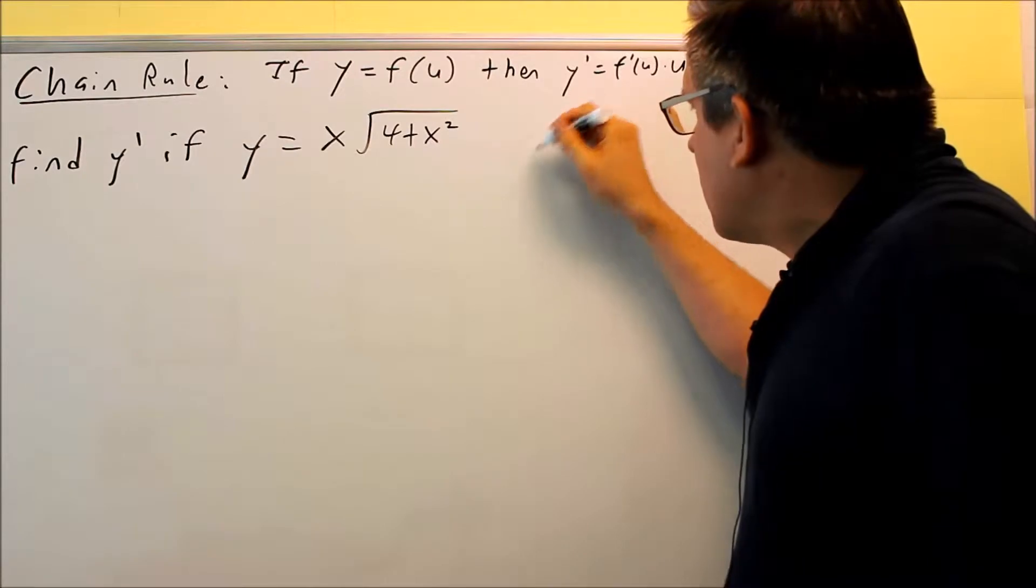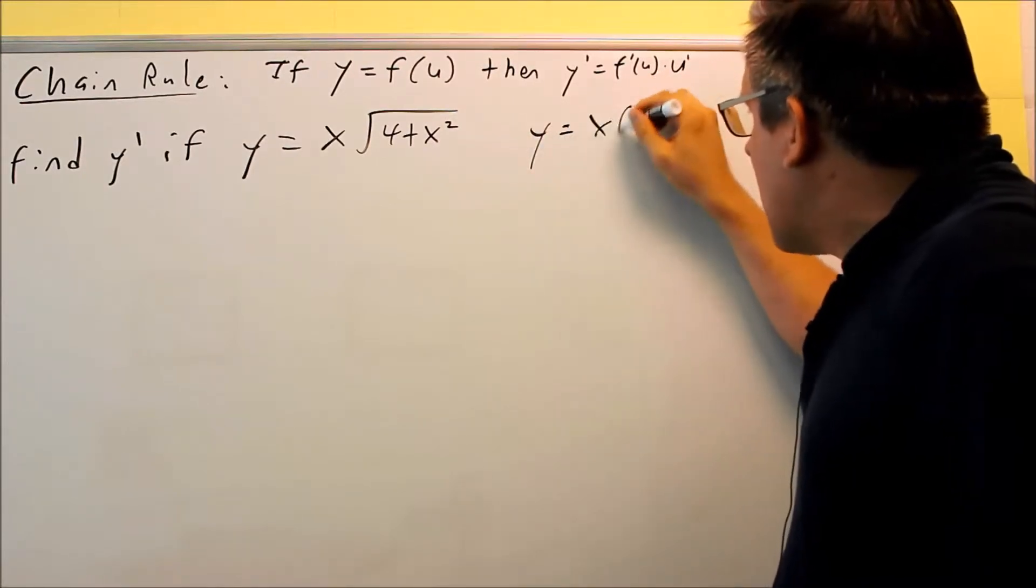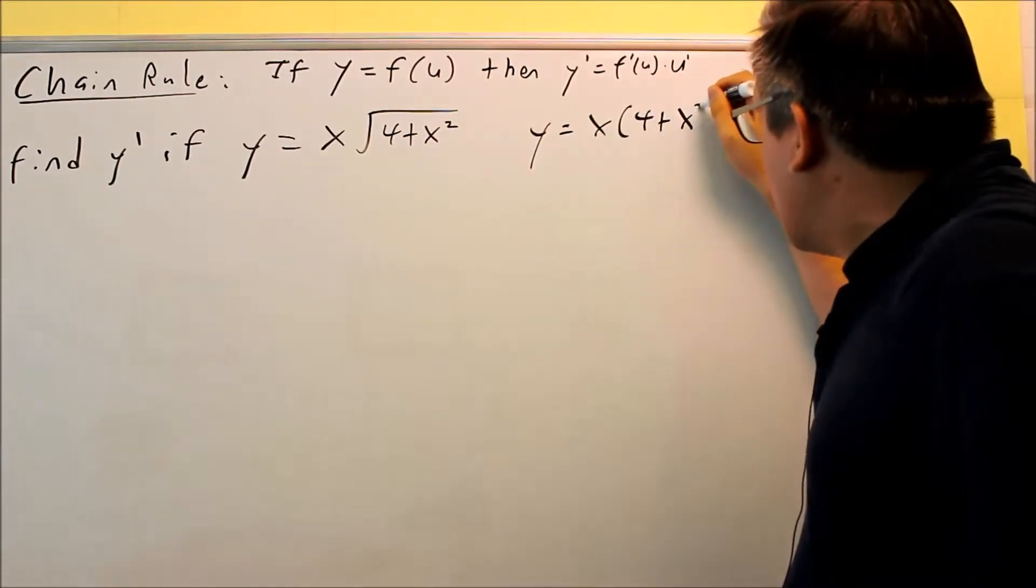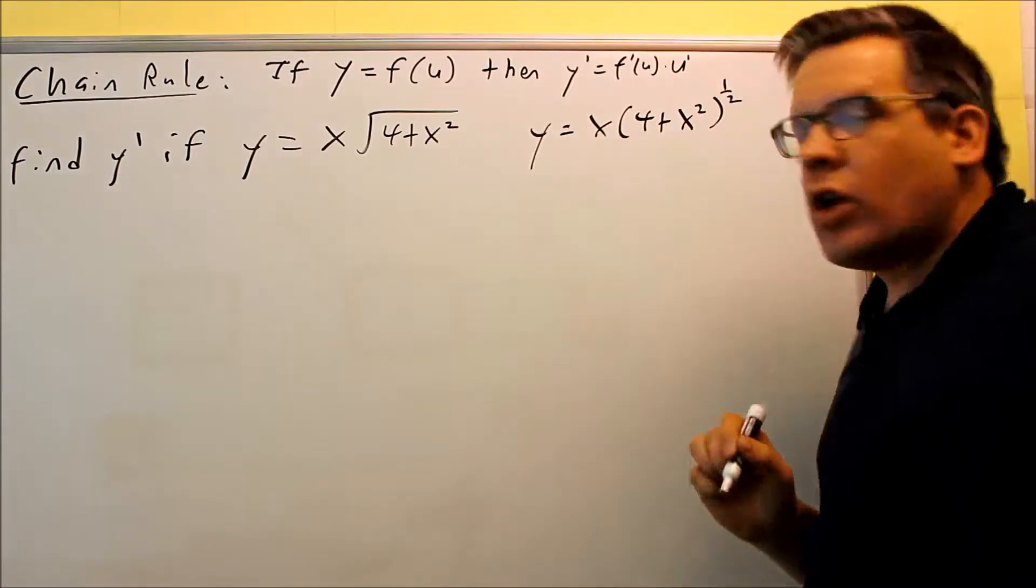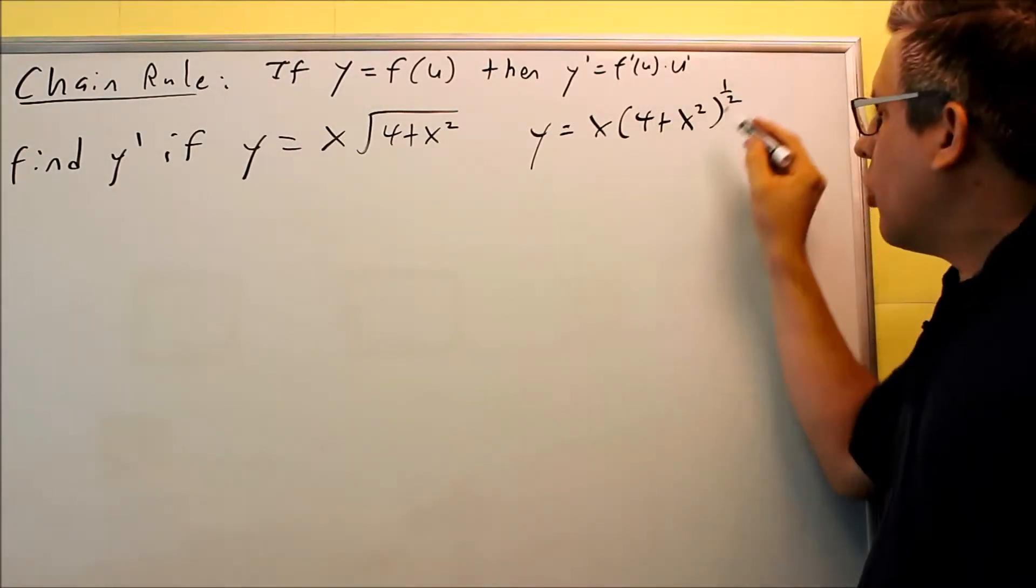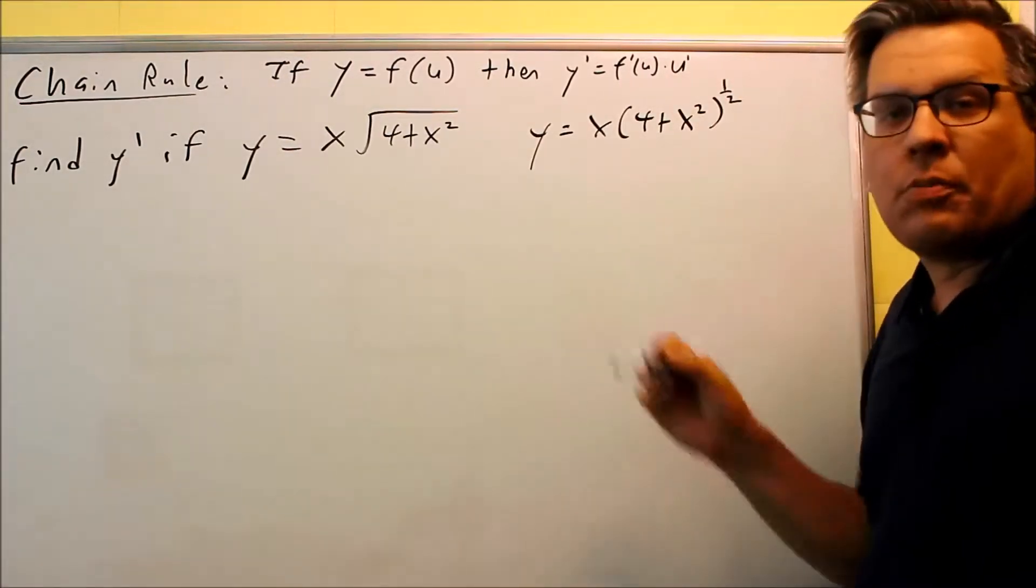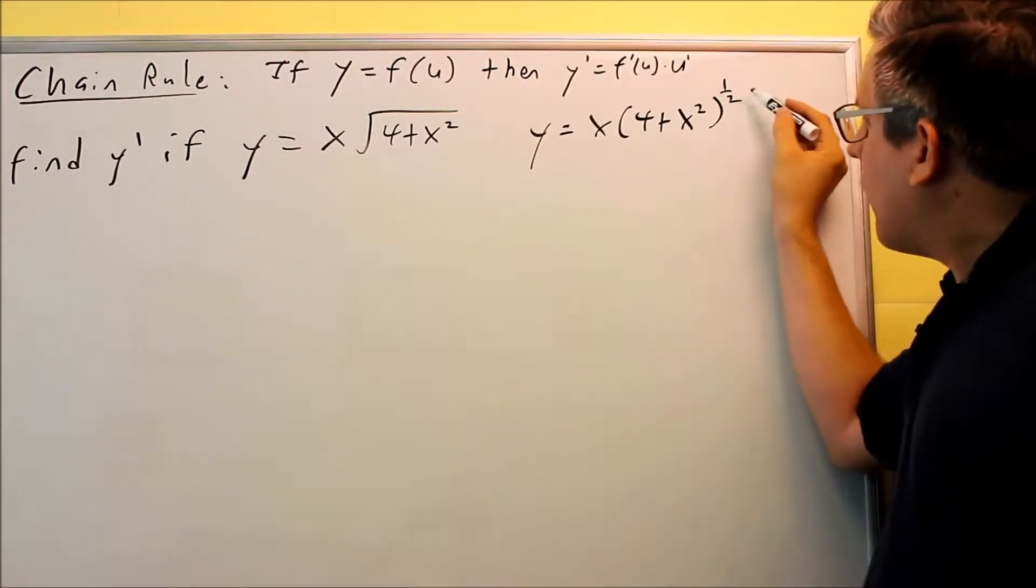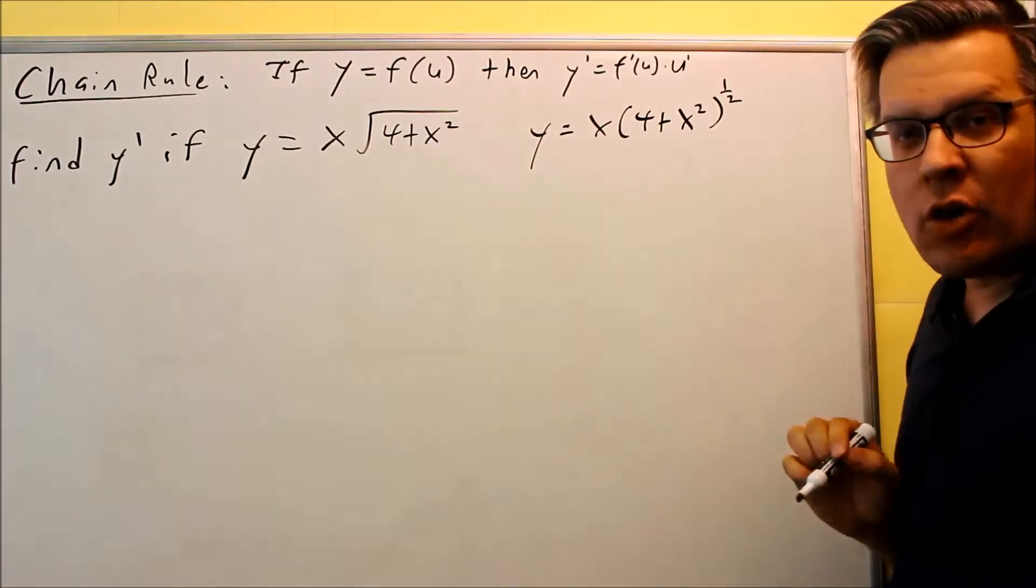So first thing I'll do is I'm going to rewrite this as x times (4 + x²) to the 1/2 power. That way when I get to the point where I'm doing the derivative of this one, it'll be a power rule that I can use easier since I'll have a 1/2 power written there.